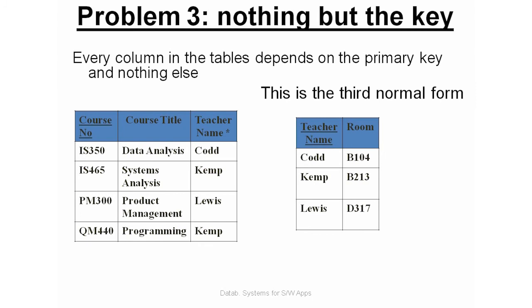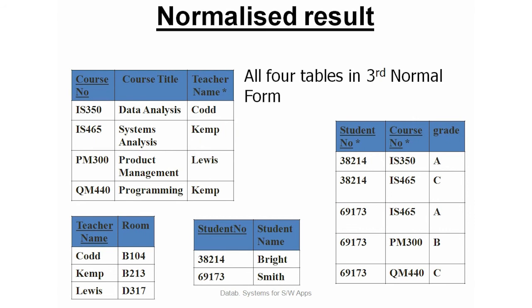And this is the third normal form. These are the four tables in the third normal form, and based on these tables we can easily build the ER model.